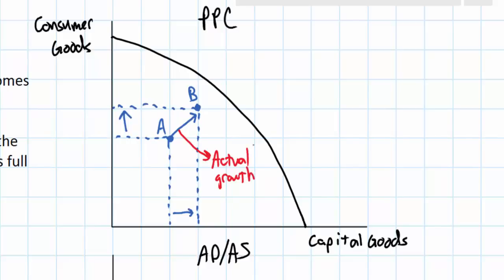Output has increased in the short run to a point closer to the nation's production possibilities curve. However, this is not an increase in the potential growth of the economy. Whereas the country is using its resources more efficiently, it is not increasing the quantity or the quality of the resources available for production.